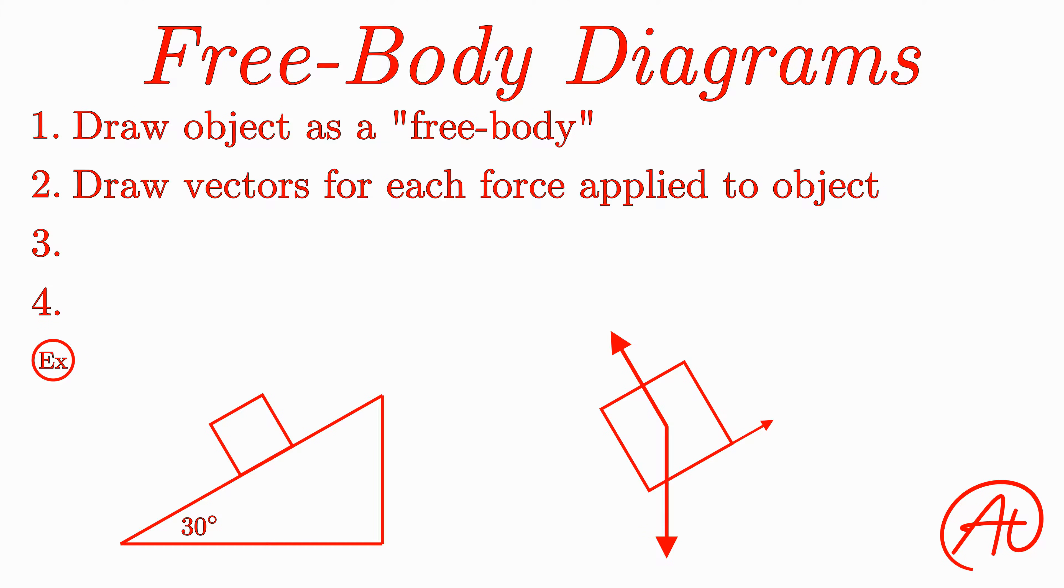So now that we have all our force vectors drawn, the next thing we'll want to do is label each of them something unique so we don't get confused as we go through the math. So let's label the object's weight vector as W, the normal force as F sub N, and the force of friction as F sub F.